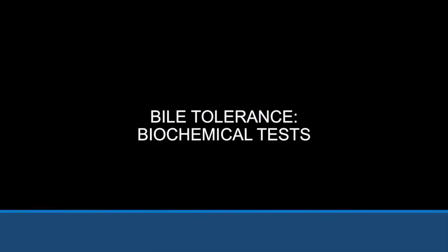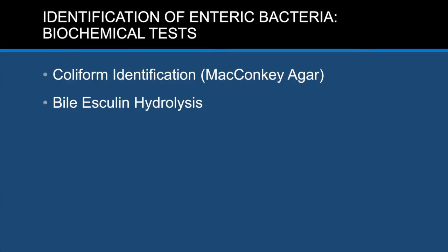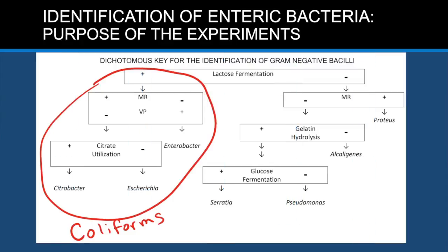Biochemical tests — bile tolerance. Enteric bacteria are found in the intestines and have to be able to survive in the presence of bile. The tests demonstrated in this tutorial are the coliform identification test using MacConkey agar and the esculin hydrolysis test. The media used in these tests are selective because they contain bile salts. Only bacteria that are tolerant of bile salts will be able to grow.